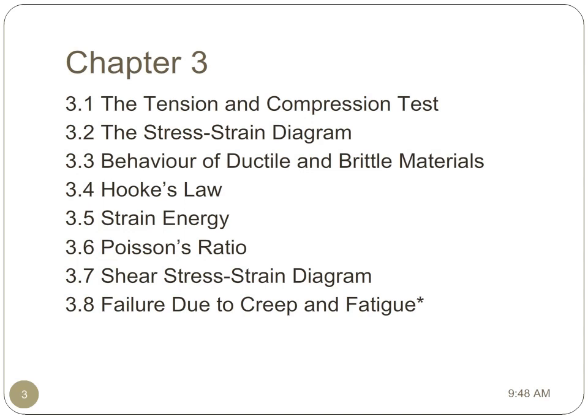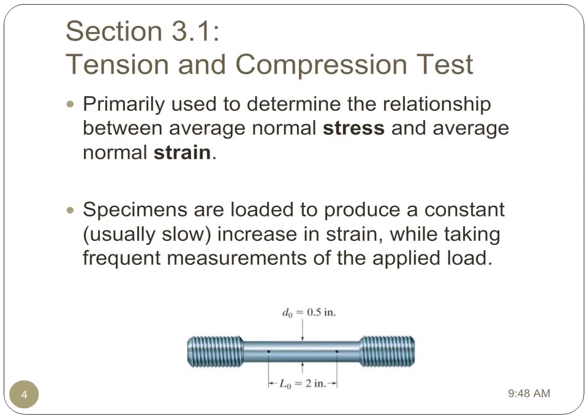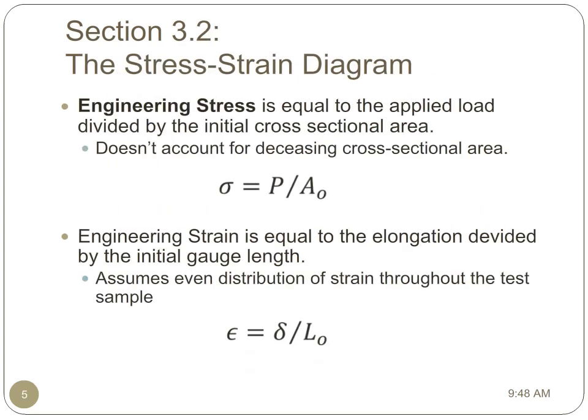The tension and compression test is the primary test used to determine the ratio between stress and strain for a material. Specimens are loaded to produce a constant, usually slow, increasing strain while taking frequent measurements of the applied load. During a tension or compression test, we develop the stress-strain diagram. In these diagrams, we usually account for the engineering stress and engineering strain. Engineering stress is equal to the applied load divided by the initial cross-sectional area and doesn't account for any decrease in cross-sectional area due to the applied load. Engineering strain is equal to the elongation divided by the gauge length, which is the original length between two marked points. This assumes an even distribution of strain throughout the test sample.